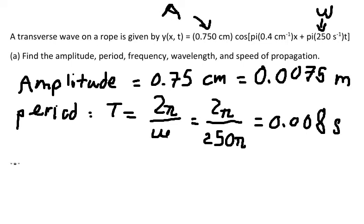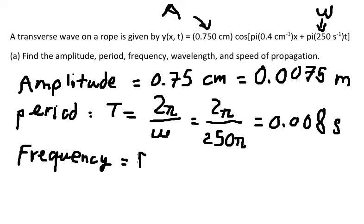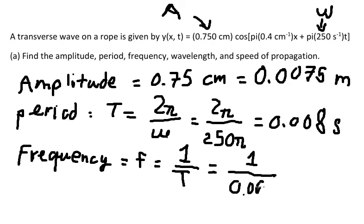The next one is frequency. To find the frequency, we use F equals 1 over capital T. Substituting the value of T — which is 0.008 seconds — we get 125 Hertz.